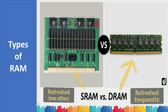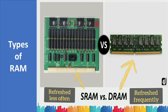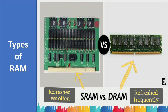Dynamic RAM is used in main memory and Static RAM is used in cache memory. That is why Dynamic RAM works slower than Static RAM. Static RAM requires less refreshment, while Dynamic RAM requires frequent refreshment to maintain the data.